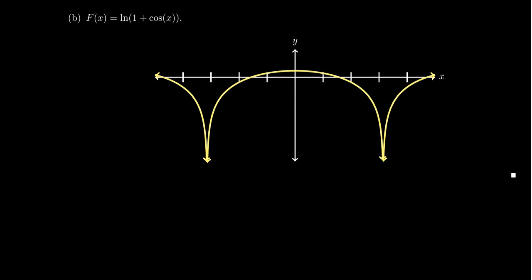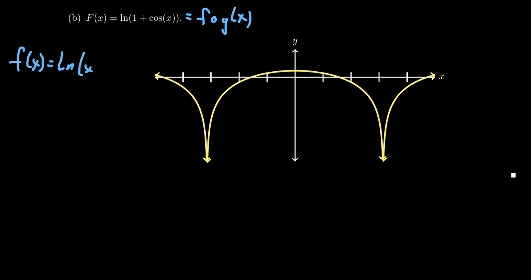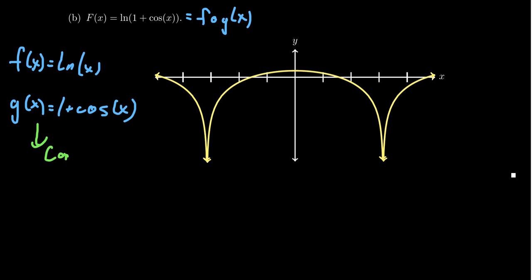Let's look at another example — this one actually is going to have some discontinuities. Take f of x equal to the natural log of one plus cosine of x. This can be decomposed as f of g of x where f of x is the natural log function and g of x is the one plus cosine function. Capital F of x is obtained by putting g of x inside of the natural log. Now, g is going to be continuous on all real numbers.